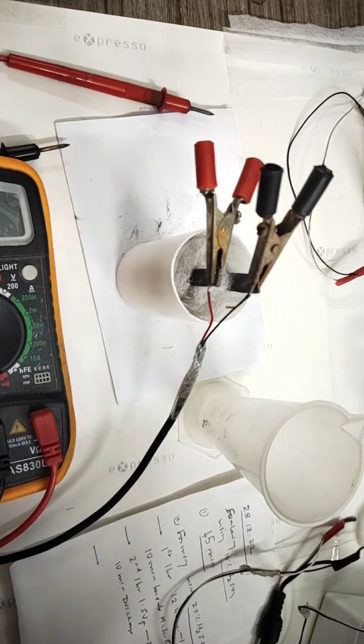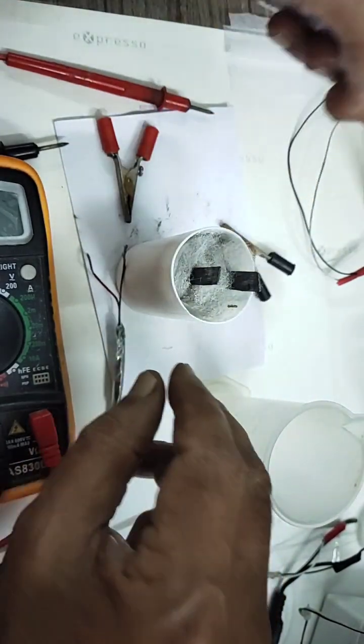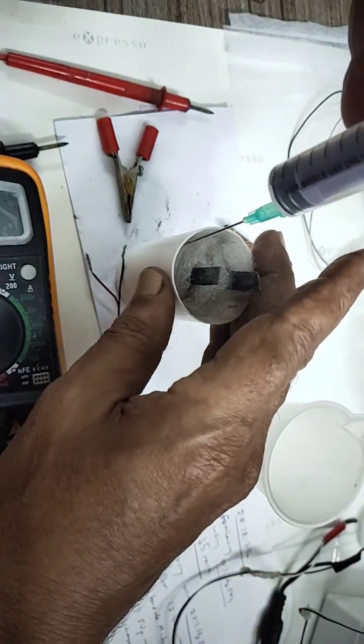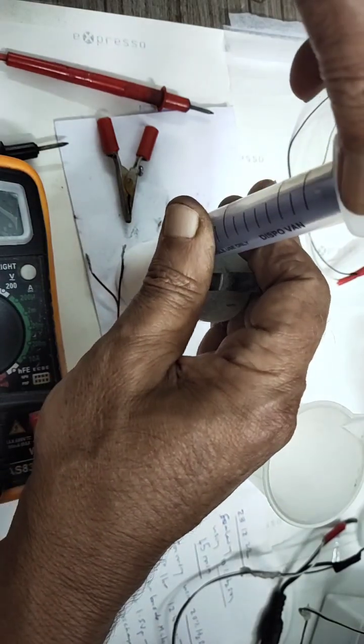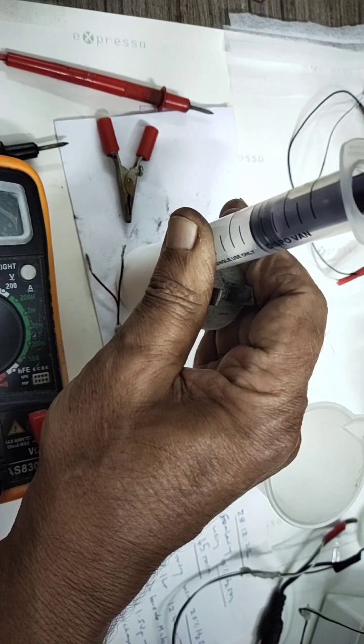Here we will switch off the charging process, I mean forming process. We will take out the terminals. Now we have to suck out the 20 percent sulfuric acid which we used for forming.